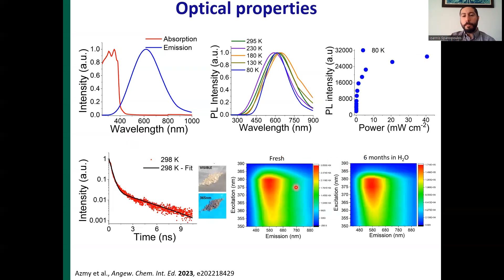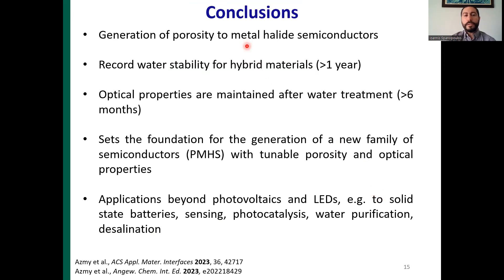Interestingly, the PL emission is unchanged by water treatment, as seen from PL spectrum maps comparing the fresh compound and the sample treated in water for six months. To summarize: we managed to generate porosity in metal halide semiconductors. The materials exhibit record water stability for hybrid compounds. The optical properties are maintained after water treatment. This sets the foundation for a new family of materials — porous metal halide semiconductors — which allows us to tune not only optical properties but also porosity, rendering these compounds suitable for solid state batteries, sensing, photocatalysis, water purification and desalination applications.